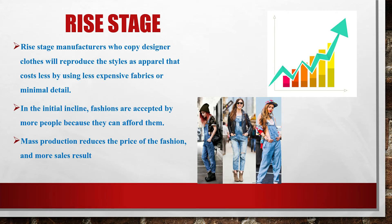In the rise stage, manufacturers who copy designer clothes will reproduce the styles as apparel that costs less by using less expensive fabrics or minimal detail. In the initial incline, fashions are accepted by more people because they can afford them. Mass production reduces the price of the fashion, and more sales result.